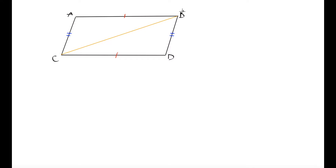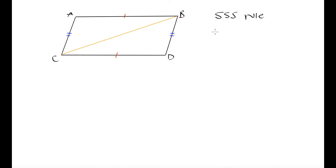Both triangles have side CB equal in length between them. In addition, side CD in our bottom triangle is equal in length to side AB in our top triangle, and side BD in our bottom triangle is equal in length to side AC in our top triangle. So we actually have three corresponding sides that are equal between our two triangles. That is one of our criteria for determining congruency in triangles, known as the side-side-side rule.